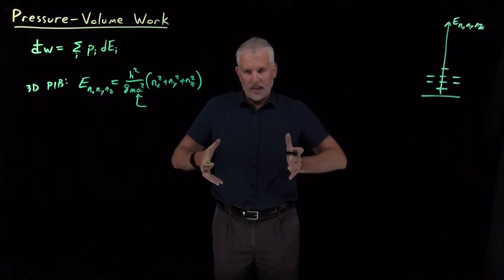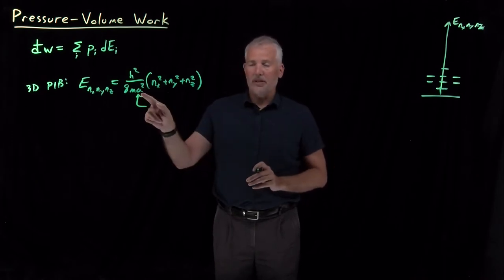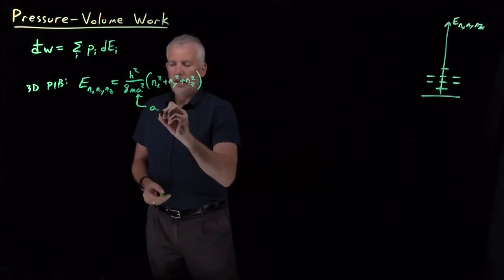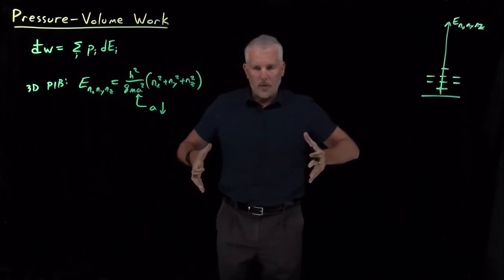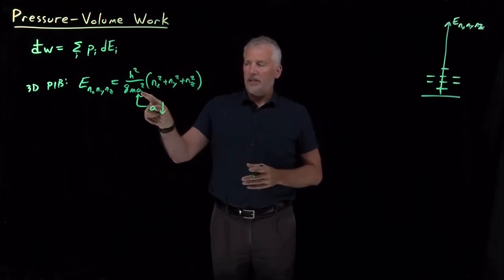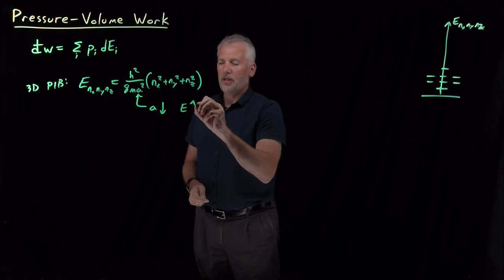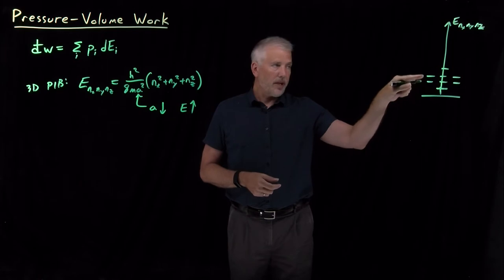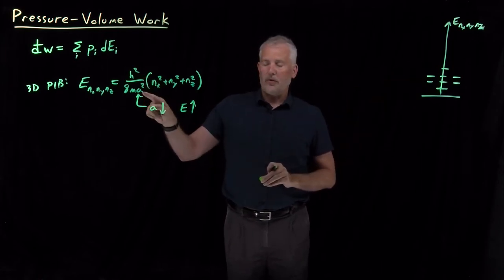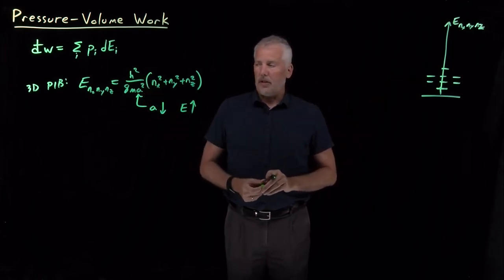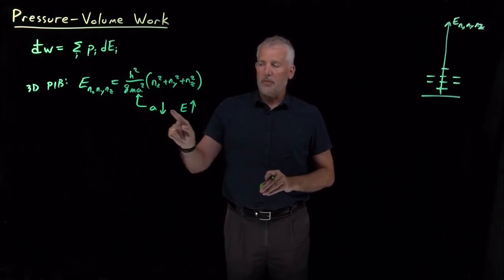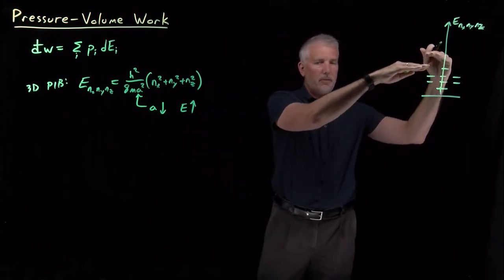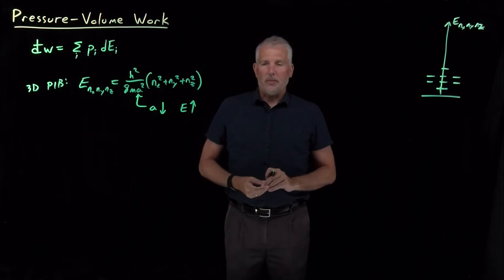So if I take the box and change the size of the box, change the volume of the box, change the length of each one of the dimensions of the box, as, let's say, I decrease the box length. If I want to make the box smaller, A is in the denominator here. So that causes the energies to go up. So when I decrease the volume, the energies go up. And not just this energy, but every one of the energies has this factor of 1 over A squared out in front of it. So when I decrease the volume of the box, every one of the states has its energies increased.